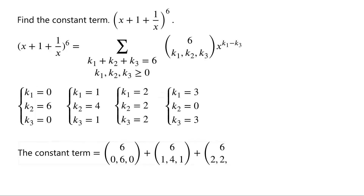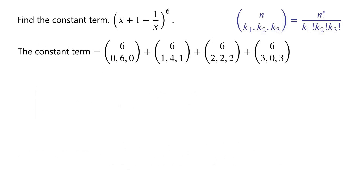So the constant term is equal to 6 choose (0, 6, 0) plus 6 choose (1, 4, 1) plus 6 choose (2, 2, 2) plus 6 choose (3, 0, 3).